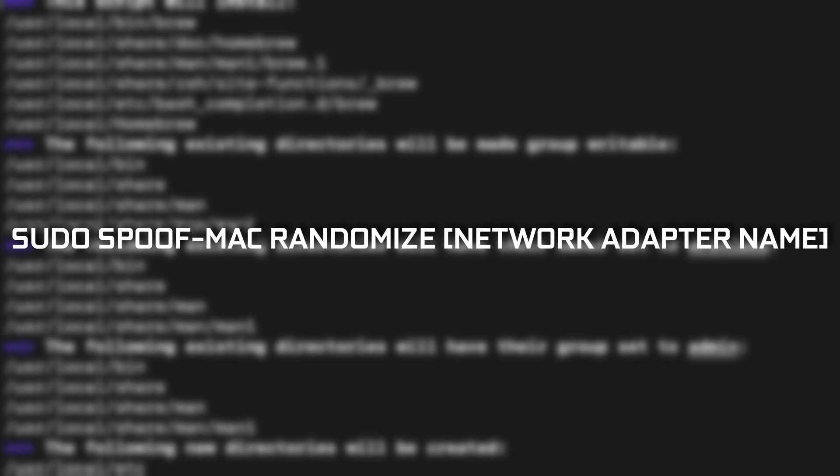Once Homebrew has installed, enter this command: sudo spoof-mac randomize, followed by your network adapter's name. It will provide you with a new randomized MAC address, and you can use the previous steps to verify it went through. The trade-off is that with this method you don't get to choose a specific MAC address — if you want a particular one, you'll need to use the manual method.